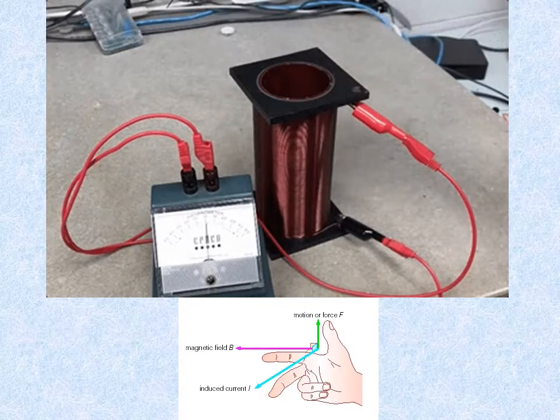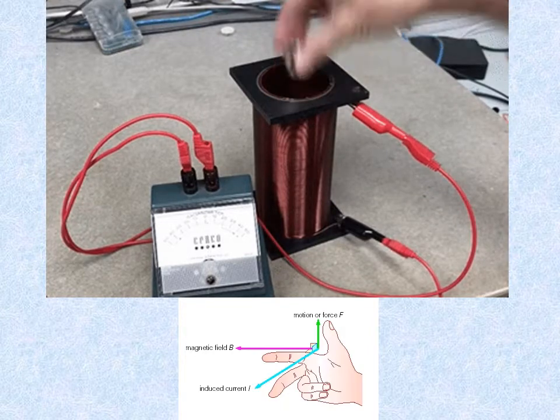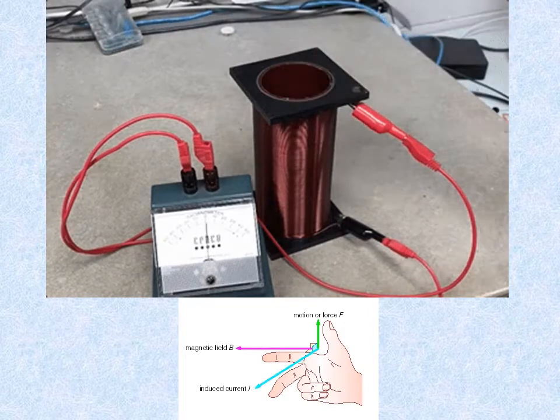Similarly, as the magnet is taken away, the magnetic field decreases and a current in the opposite direction is generated. Note, though, that when the magnet is stationary, there is no voltage.